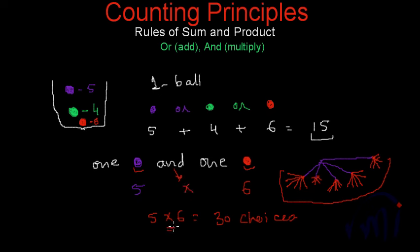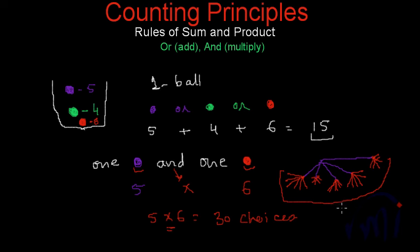And after this, if you also want to select one green ball, then for each of those 30 choices you again have 4 more choices. In that case, you multiply 30 by 4, and you will have a total of 120 choices for selecting one purple, one green, and one red ball.